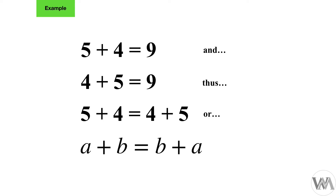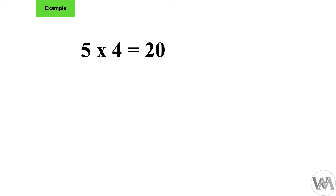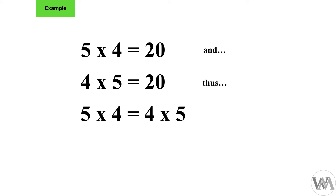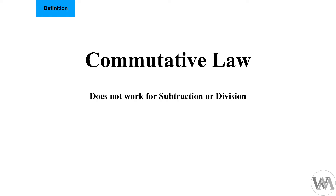So a plus b equals b plus a. For multiplication: five times four equals 20, and four times five also equals 20, so five times four equals four times five, or a times b equals b times a. It is very important to remember that the commutative law only works for multiplication and addition — not for subtraction or division. If we use a minus or divide operator, we will not get the same answer when we swap the numbers around.